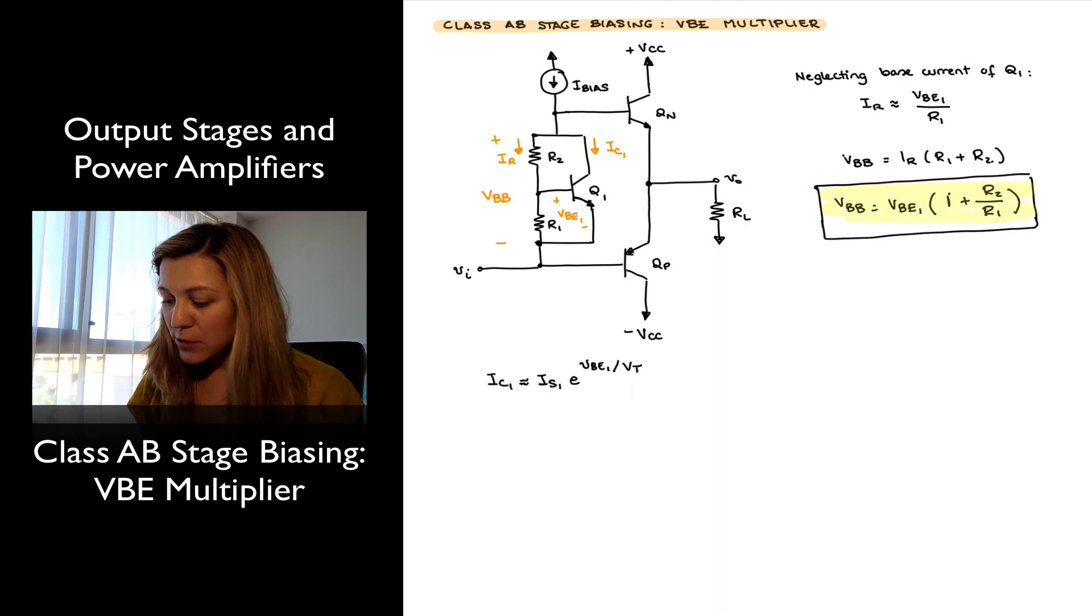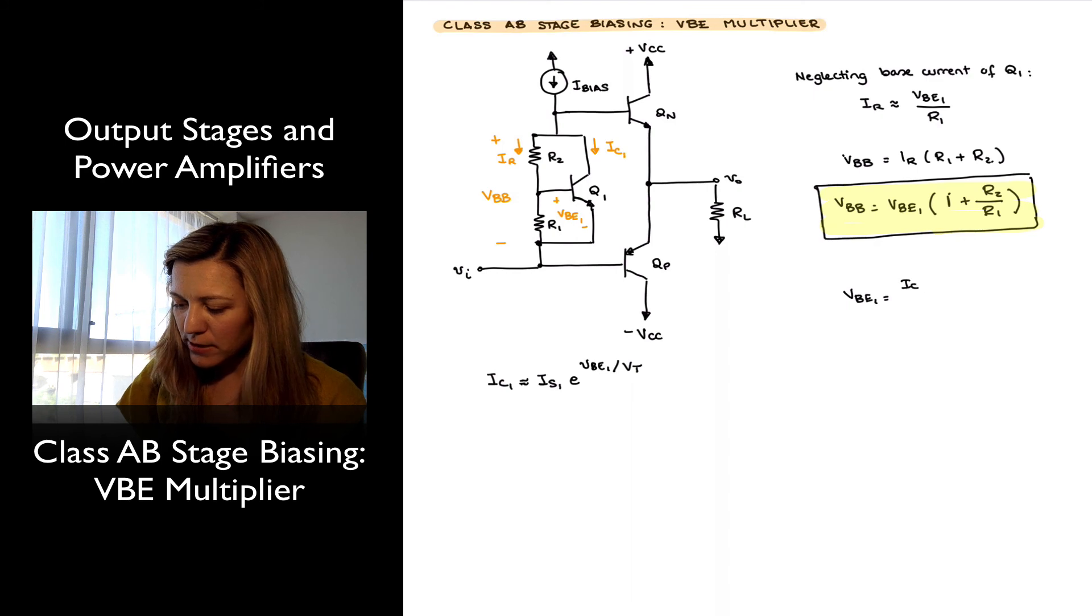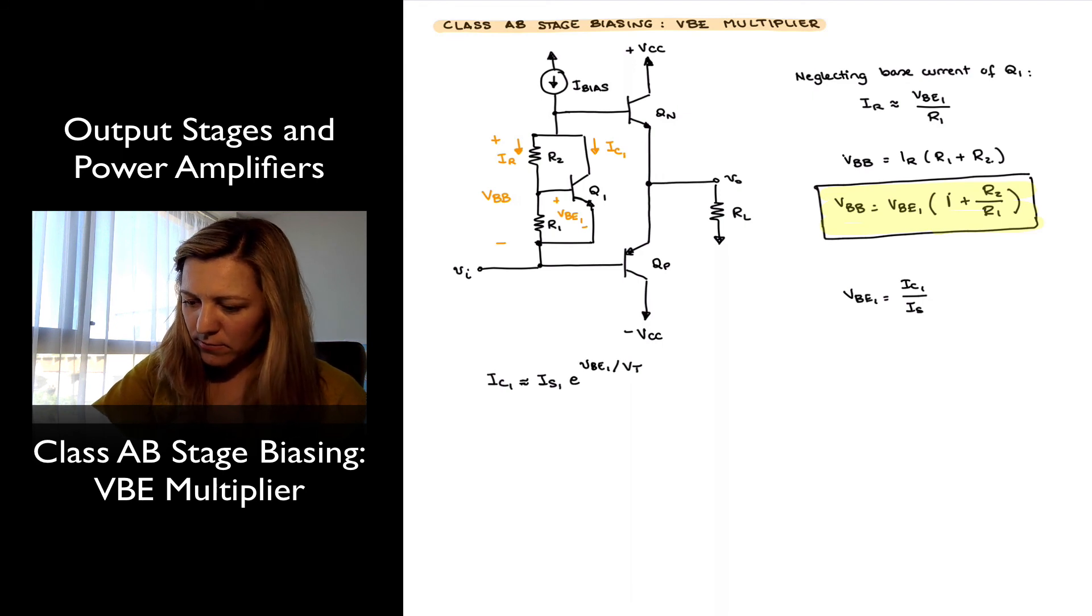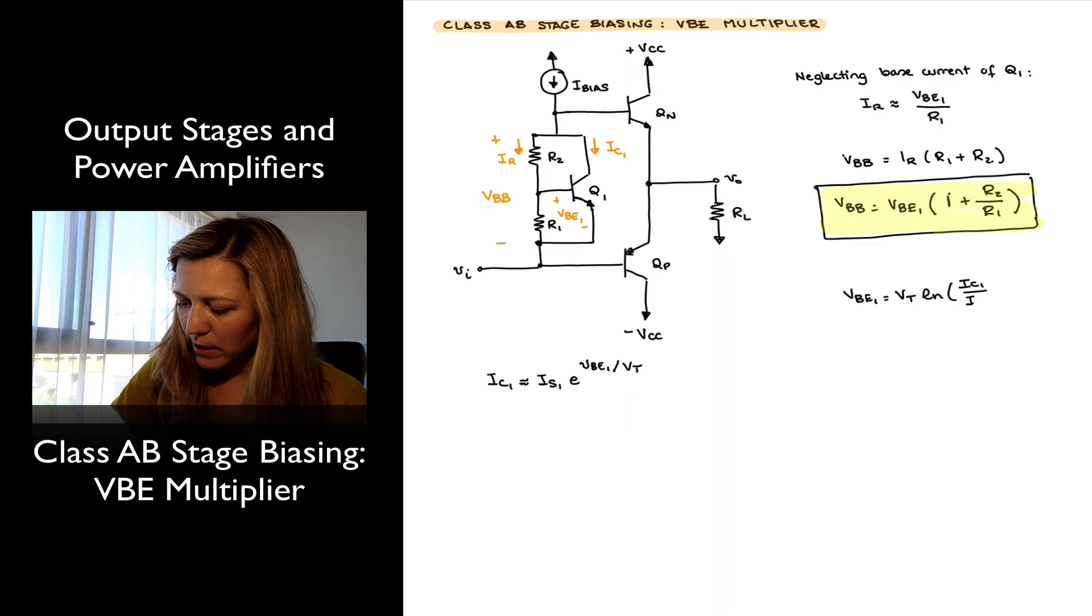So I'm going to highlight this expression. If we wanted to calculate the value of VBE that we need in order to set a particular VBB voltage, we will do so by noting that VBE1 is going to be equal to VT times natural log of (IC1 divided by IS1).